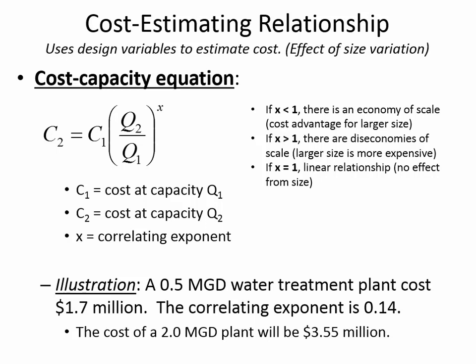Let's say we have a known plant that is 0.5 MGD, and we're interested in a treatment plant that will do 2 MGD. We have the cost data: C1 is 1.7 million, and the correlating exponent X is 0.14. So we can predict what the cost of the larger plant will be. C2 equals 1.7 million times the ratio of the two sizes — 2 to 0.5 — raised to the power of 0.14. I think I've already solved it here; it should be 3.55 million.